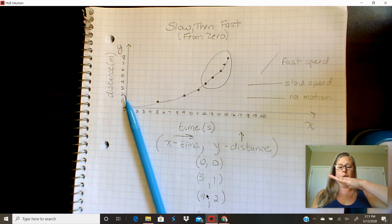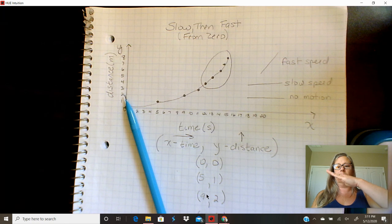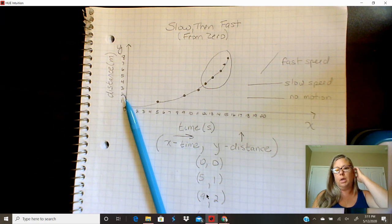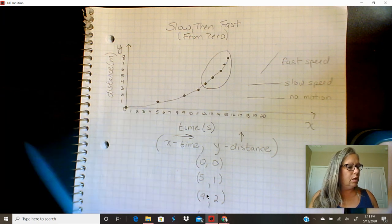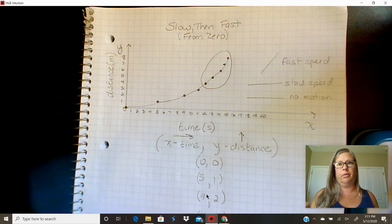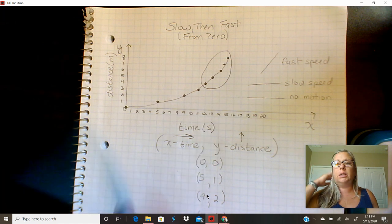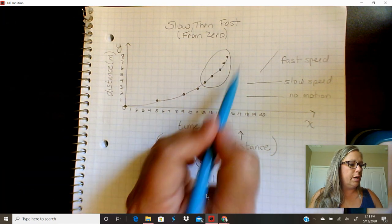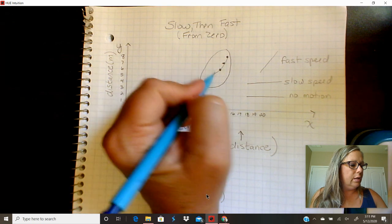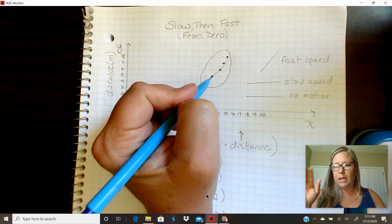So the way I always tell people to remember this is to remember that when you have a horizontal line it's no motion whatsoever. And then if your speed is just a little bit faster than nothing then your slope of your diagonal is going to be just a little. And then if you really increase your speed, which means you're taking less time to do things, then it makes the slope get very very steep.